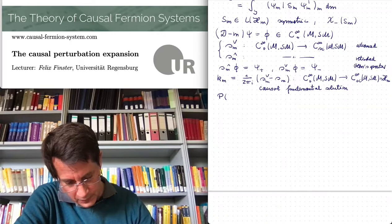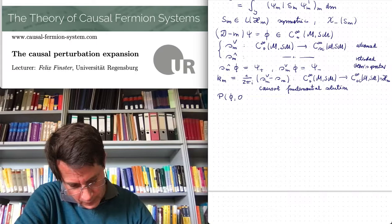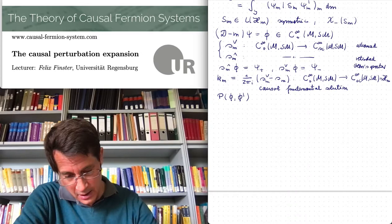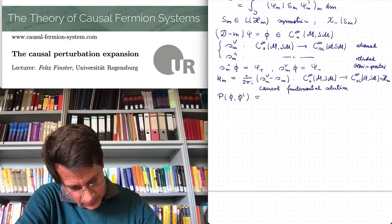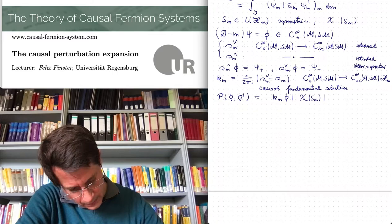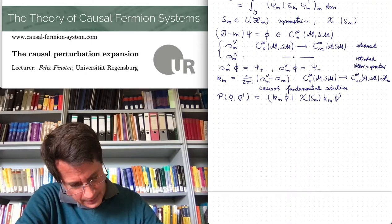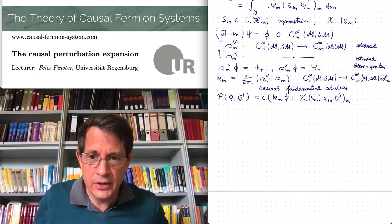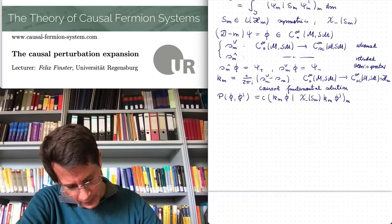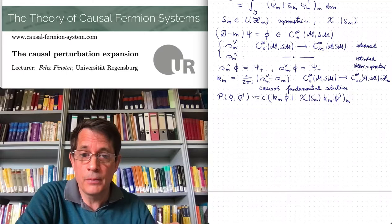Using this notion, how did we introduce the kernel of the fermionic projector? This is a bi-distribution, so it depends on two test wave functions. P(φ, φ') was defined as follows: we take K_M φ, then K_M φ', and then we take the scalar product — up to a certain constant prefactor. So this was the definition and this is the kernel of the fermionic projector — more precisely, the unregularized kernel.